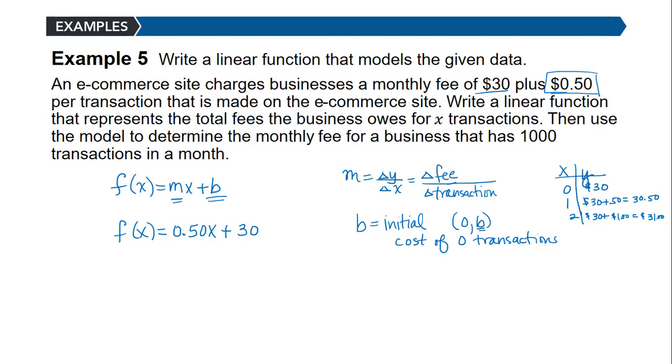Now I want to find the cost or fee for 1,000 transactions in a month. So I need to find f(1000), which would be 0.50 times 1,000 plus 30. This is $500 plus $30, or $530.